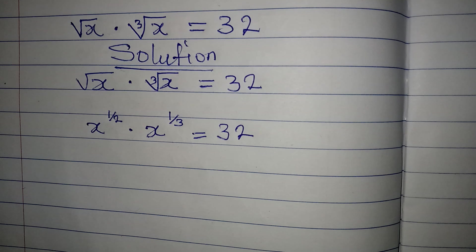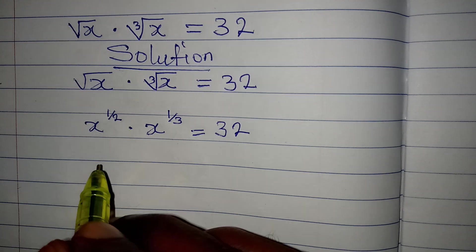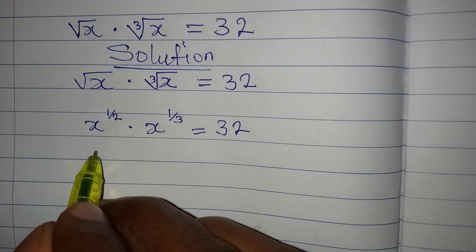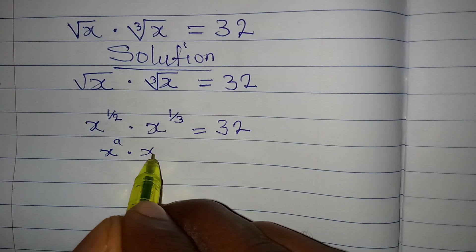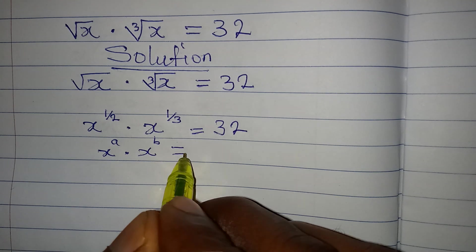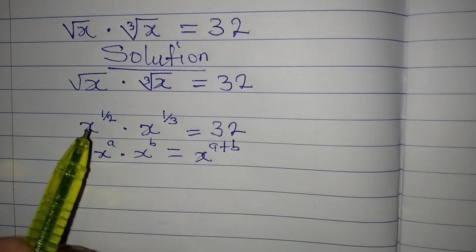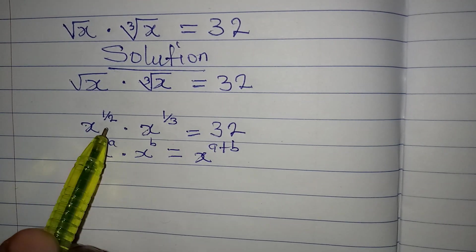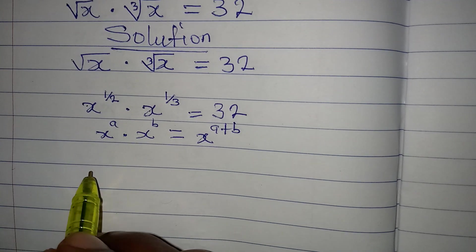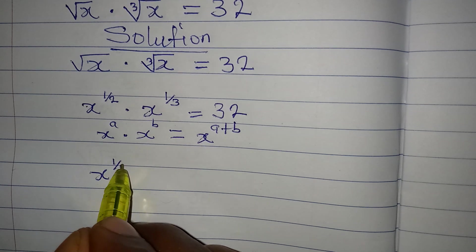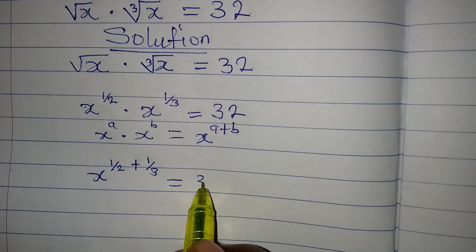We are going to continue. We have the same base. Recall the law of exponents that says if you have x to the power of a multiplied by x to the power of b, that equals x to the power of a plus b. Because we have the same x, we add the powers: x to the power of 1 over 2 plus 1 over 3, equal to 32.